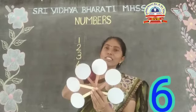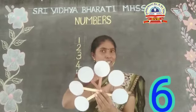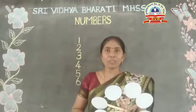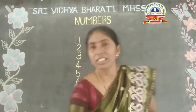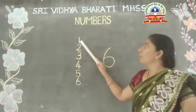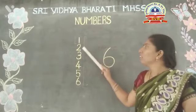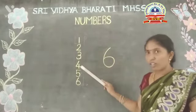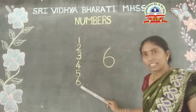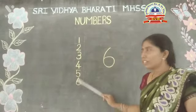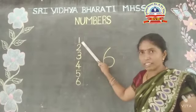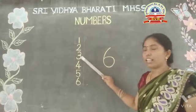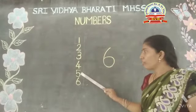Ok children, alright. Shall we move to the next number? Look at the board. The next number is 6, 6, 6, 6. Let us write the number in sequence. Say it with me. 6, 6, 6, 6.